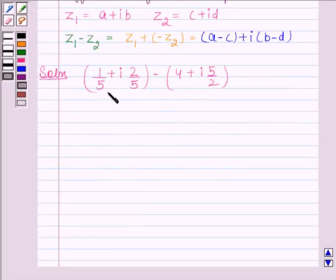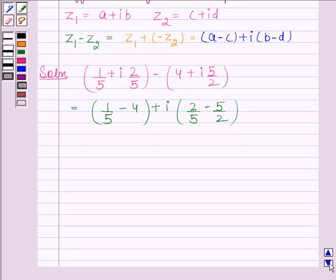We will take the real and imaginary parts in separate brackets. So this is equal to (1/5 - 4) + i(2/5 - 5/2).